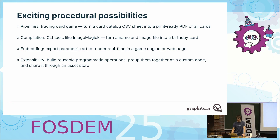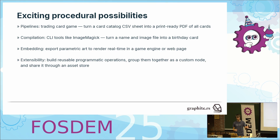This allows for some exciting possibilities. For example, if you want to build a trading card game — with a title text, an image, stats, and a nice frame — you could build a pipeline in the editor which ingests a CSV file containing the path to the source image and the title. You can use Graphite as a language to build this procedural construct, which can be rendered out as a card. You could also turn this into a CLI application for batch processing or automating workflows and general templating.